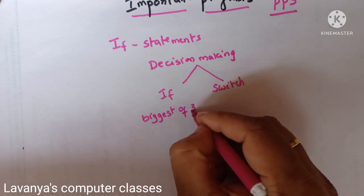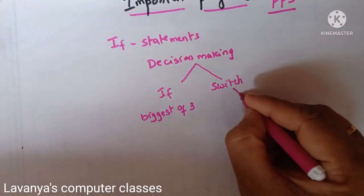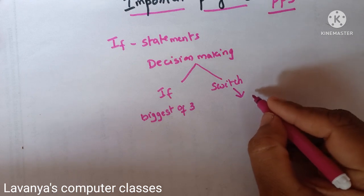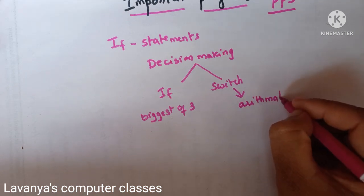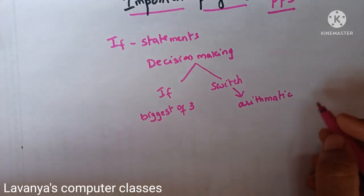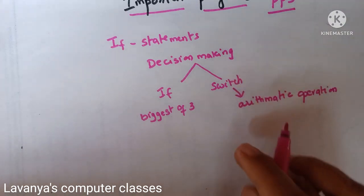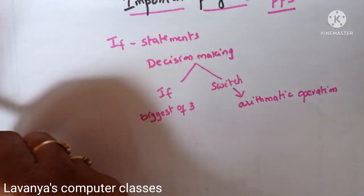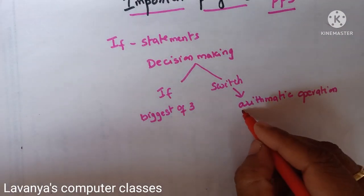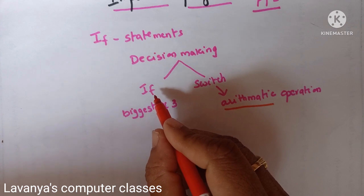In the if statement, the important programs are: biggest of three numbers and biggest of two numbers. In the switch statement, if they are asking you to explain the concept, explain with an example program. The most important program is calculating all arithmetic operations using switch statement — you must compulsorily learn this program.